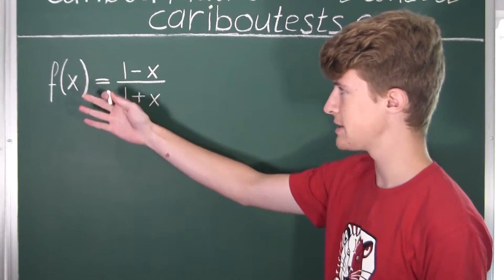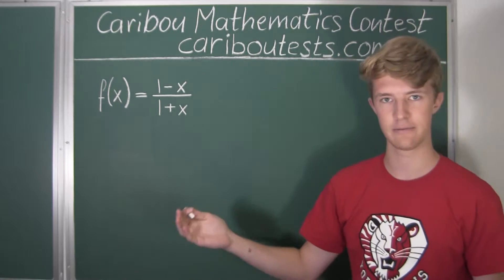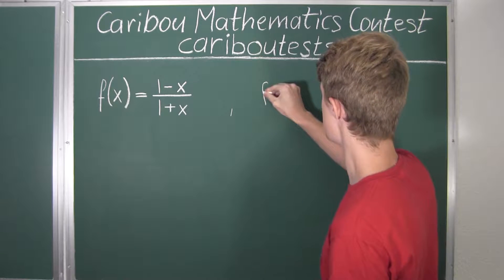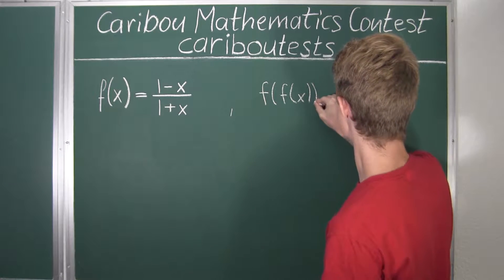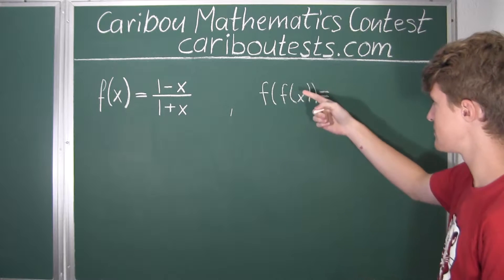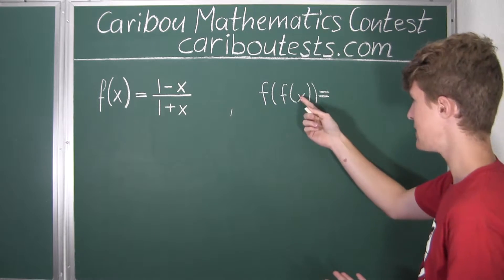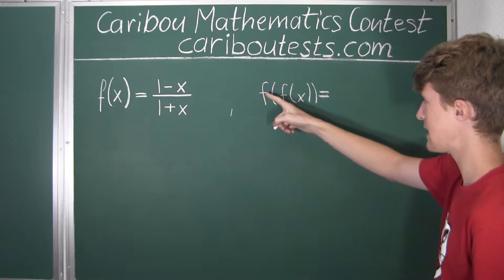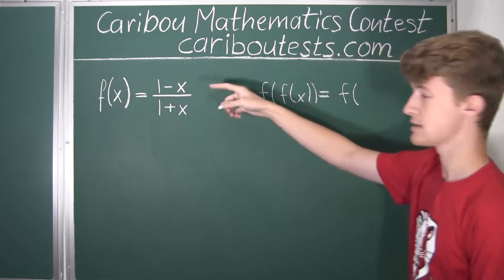We already have written up here that f of x is equal to this fraction. What we want to know is what is f of f of x. We can simplify the inside of the outer brackets, as all it is is just f of x. And we know that f of x is equal to this fraction, so we will write f of this fraction instead.